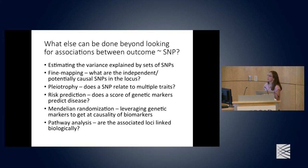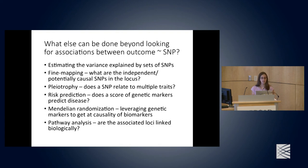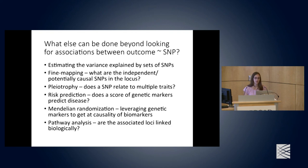Secondary analyses you can do include: estimating the variance explained by a set of SNPs; fine mapping to look for independent or potentially causal SNPs within a locus; checking for pleiotropy — whether SNPs relate to other traits; risk prediction using a score of GWAS variants to predict disease; Mendelian randomization to leverage genetic markers to infer causality of biomarkers on an outcome; and pathway analyses to ask whether associated loci are linked within biological pathways.